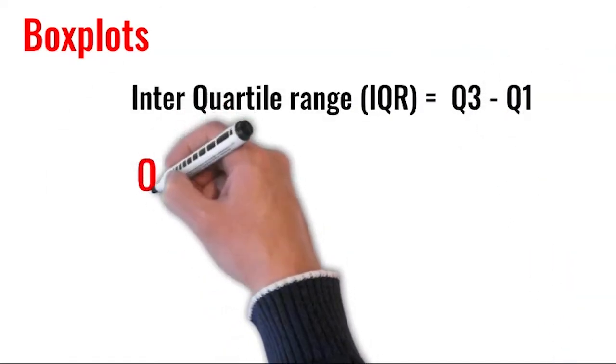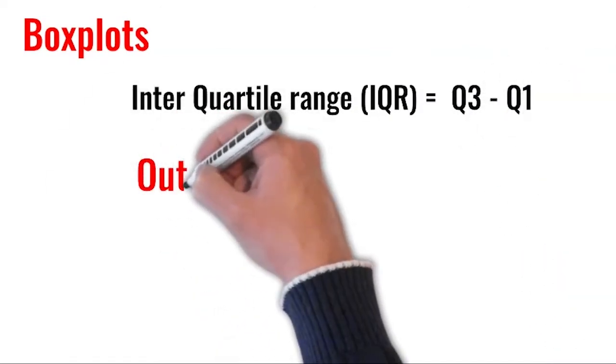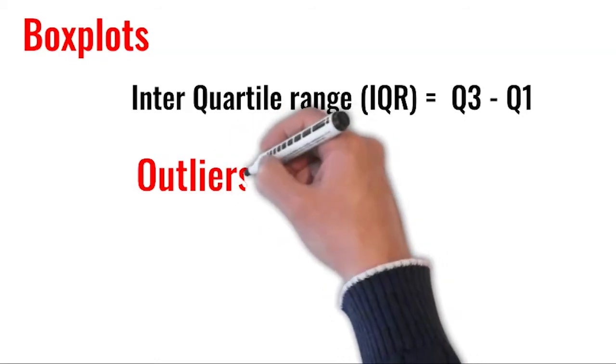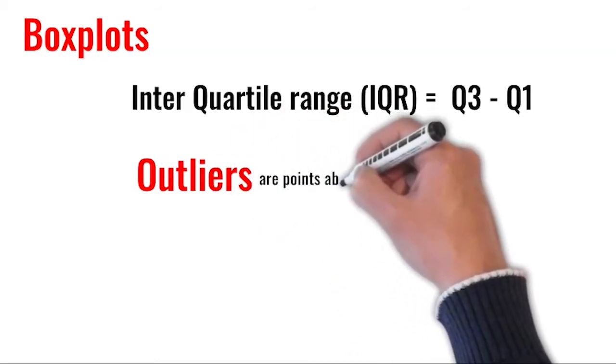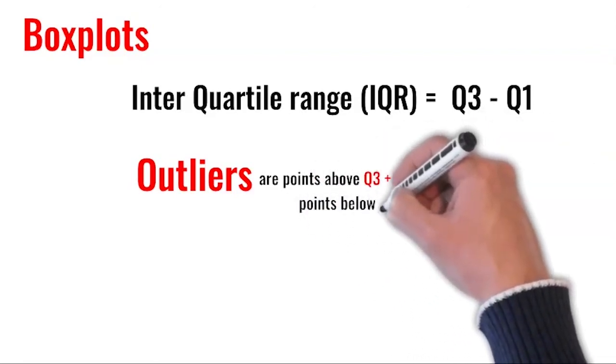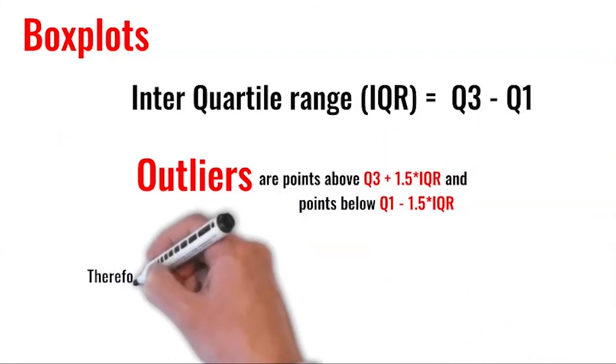Outliers are those data points which are above Q3 plus 1.5 times IQR, and data points which are below Q1 minus 1.5 times IQR. The maximum and minimum limits of a BoxPlot are defined in that way.